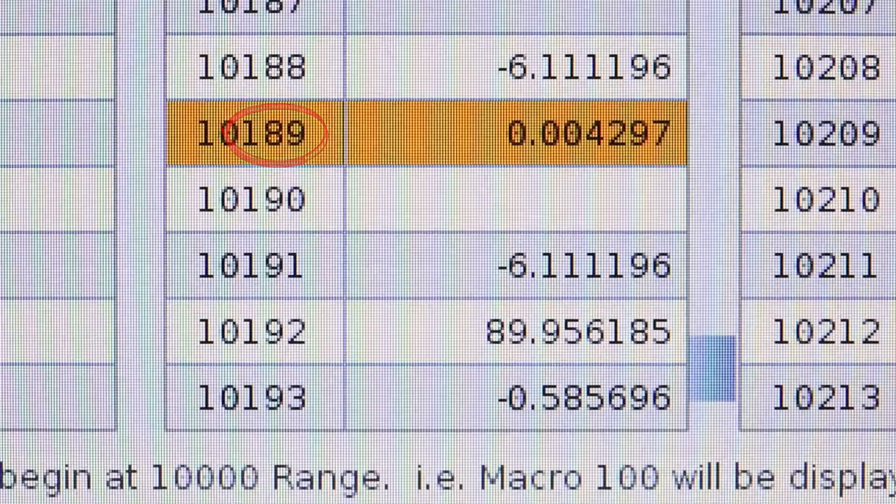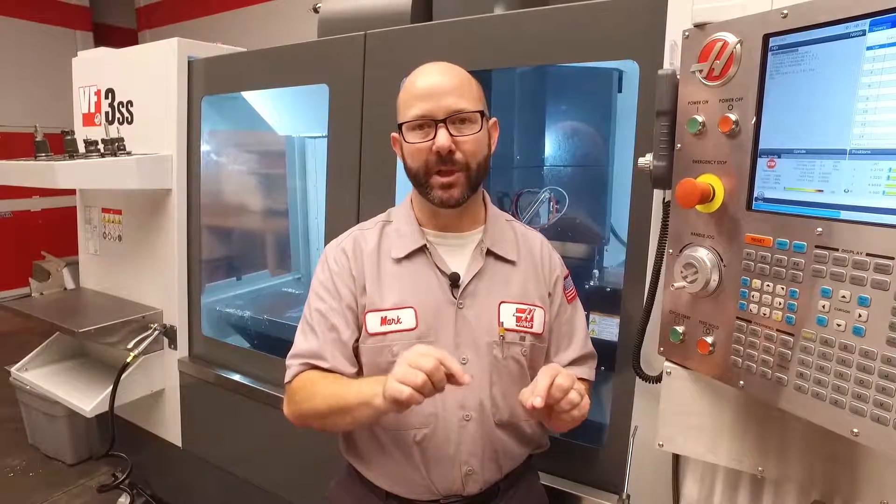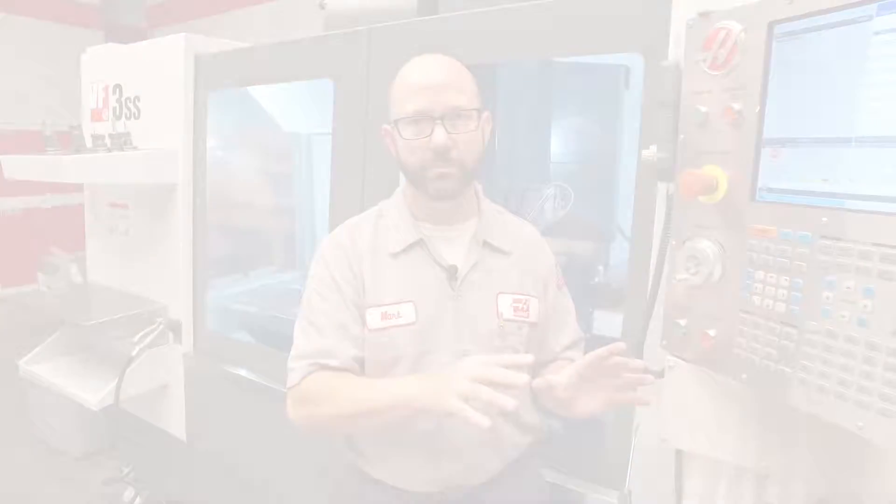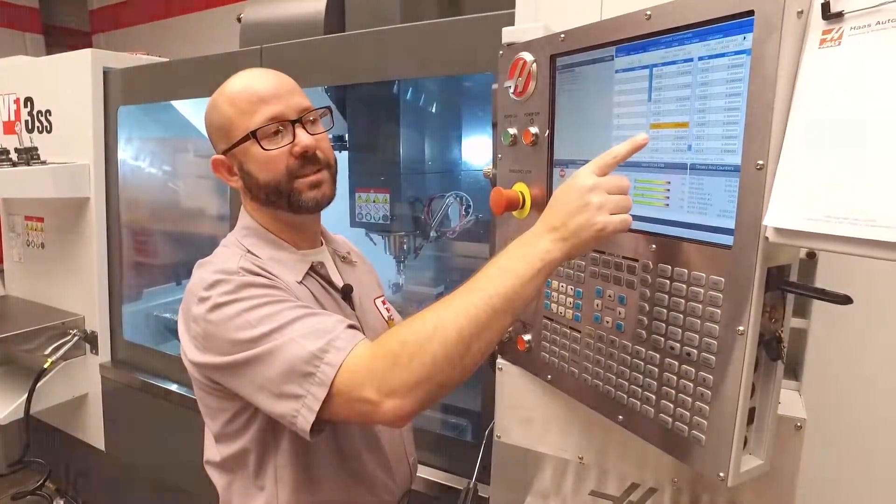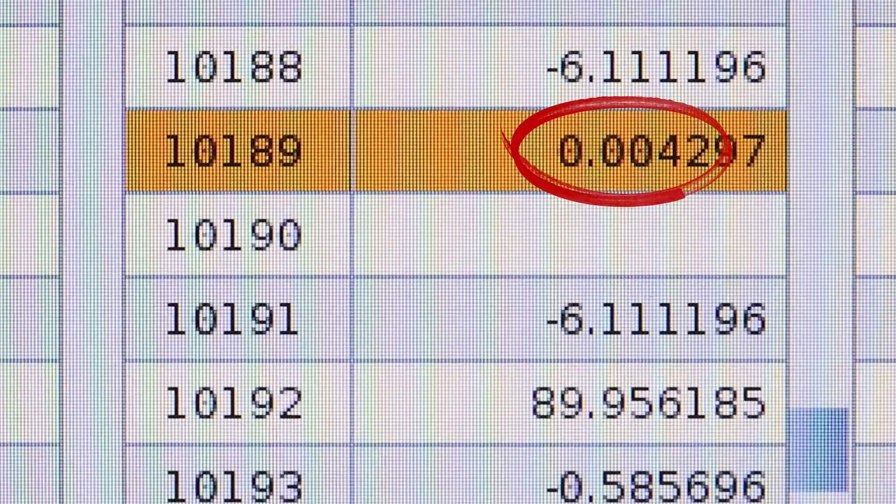We're working on a next generation control here. Macro variable 189 and macro variable 10189 are interchangeable on this control. On my macro variable page, it says that 10189 is at 0.004. That means that my X axis angle is four thousandths of a degree.